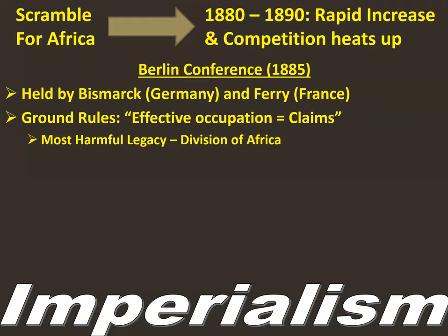This is going to divide Africa up amongst the Europeans, and this leads to what we can refer to as the most harmful legacy of Africa — its division. It's going to unite enemies that have been against each other for a very long time and divide kinship groups. The Europeans do not regard what the Africans have already created in any way, shape, or form — a lot of the divisions are just going to be lines on a map that mean nothing to the Africans but a whole lot to the Europeans. Germany now also steps up to the stage of trying to become an imperialist nation.